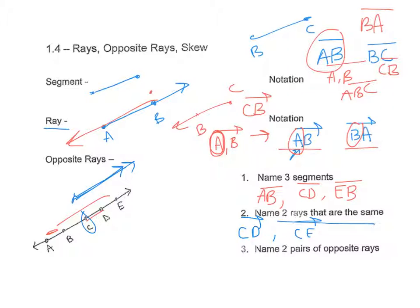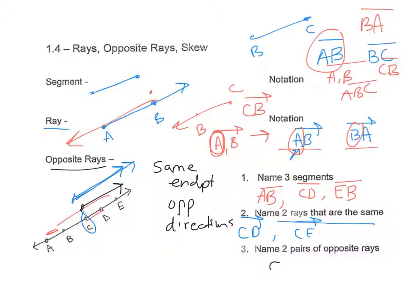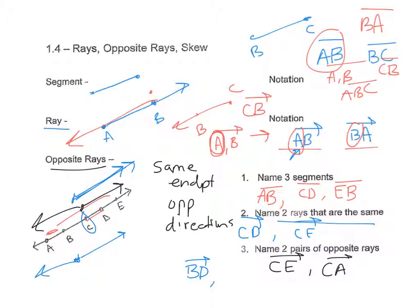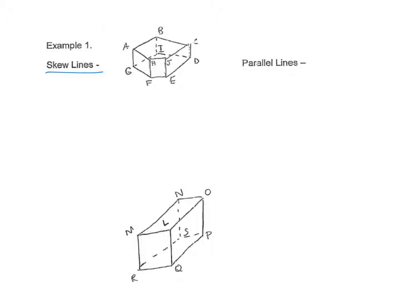Name two pairs of opposite rays. Opposite rays have the same endpoint but go in opposite directions, and together they make a line. Starting at C: ray CE goes one way and ray CA goes the opposite way — together CE and CA make a line. Another example: ray BD is opposite to ray BA; both start at B but go in opposite directions.